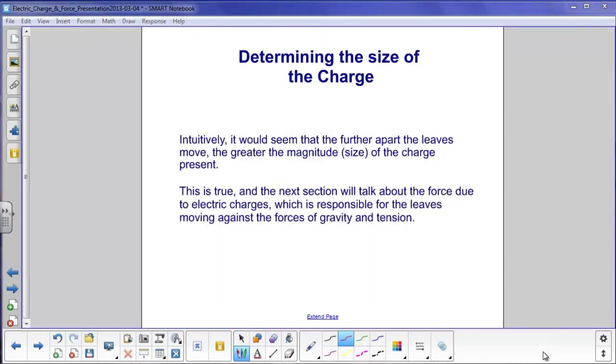Earlier, it was mentioned that the electroscope can be used to find both the type of charge on an object and also the magnitude of it. Intuitively, it would seem that the further apart the leaves move, the greater the magnitude or size of the charge present. If it was a tiny charge, the leaves wouldn't move very far at all. If it was a large charge, you would see them move quite dramatically. And hopefully, if you've already done this demonstration, you've seen that effect.